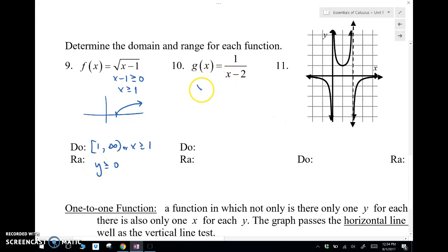Here we have a restriction that x minus 2 cannot be zero. The denominator cannot be equal to zero. So I know that x cannot be equal to two. So that's my domain, x is not equal to 2, once I solve this. Or you can write it as negative infinity to 2, and 2 to infinity.